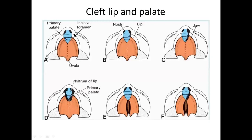In the diagram, the blue structure is derived from the median nasal process and the red structures are the palatine shelves. When the median nasal process fails to fuse with the maxillary prominence just anterior to the primary palate, this is a unilateral cleft lip. If it also affects the primary palate, it is a unilateral cleft lip and palate. If the median nasal prominence fails to fuse with both maxillary prominences, it is bilateral cleft lip and palate. If the two palatine shelves fail to fuse with each other in the midline but the Y suture is formed, it is cleft palate.